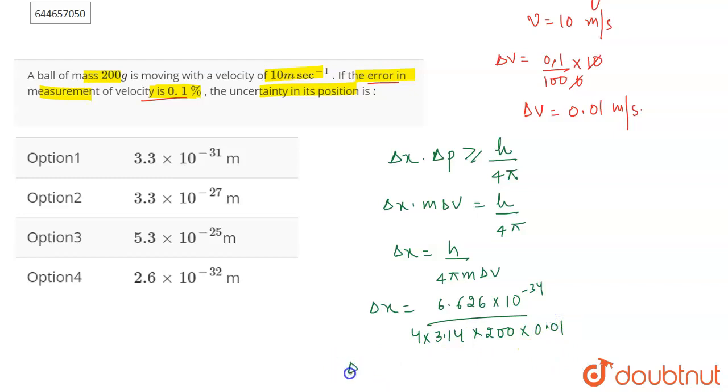On solving this, delta x will come out to be equal to 2.6 into 10 to the power minus 32 meters, and this is going to be the correct answer for the question. And this is given in option